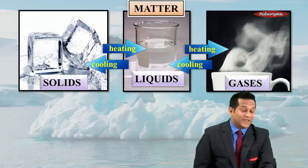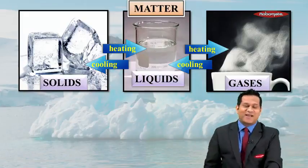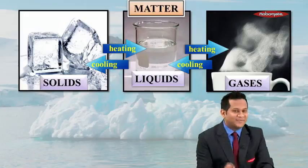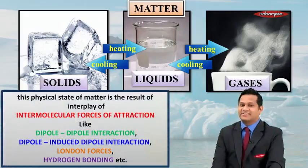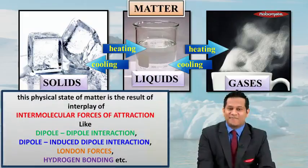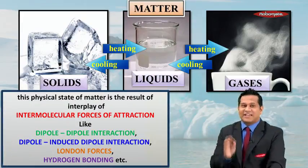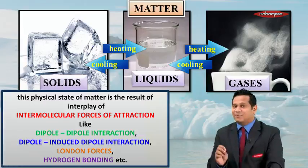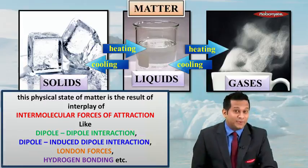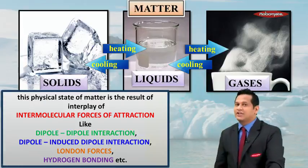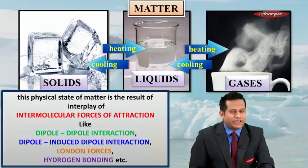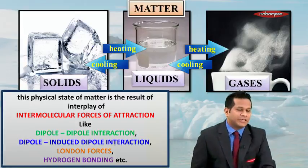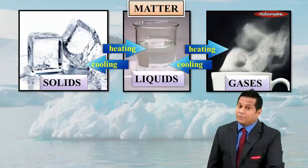If the question is how these three states of matter are interconvertible, the answer is simple: intermolecular force of attraction. The physical state of matter is the result of the interplay of intermolecular forces of attraction, like dipole-dipole interaction, dipole-induced dipole interaction, London forces, and hydrogen bonding, among others. This is the reason for the interconversion of the three states of matter.